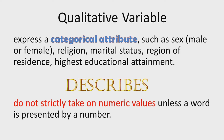Qualitative variables express categorical attributes such as sex — meaning male or female — religion, marital status, region of residence, and highest educational attainment. Remember, qualitative variable describes. Do not strictly take on numeric values unless a word is represented by a number. For example, if you're asked 'How happy are you? Rate your happiness from 1 to 10,' that is still considered a qualitative variable because your happiness is being described using numbers.